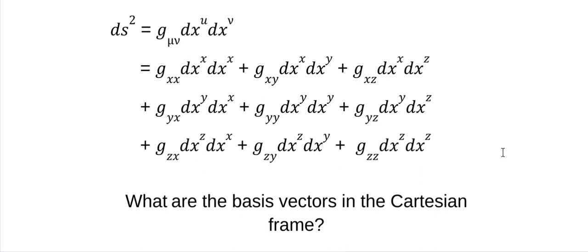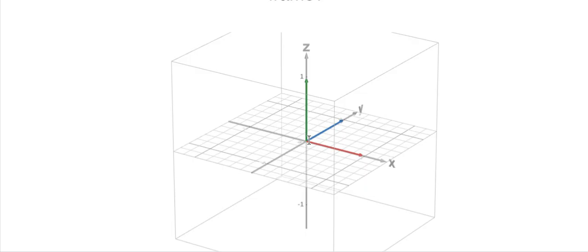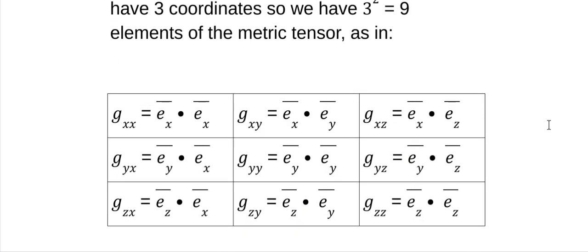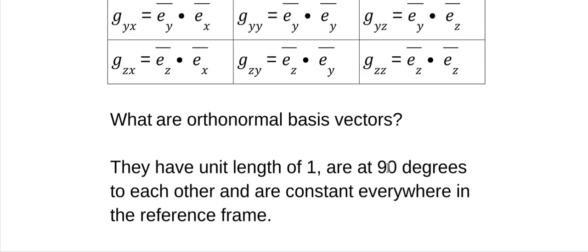Now, what are the basis vectors in a Cartesian frame? Well, you know what they are — you've been using them your whole life. They're just the unit vectors: i, j, k, or x-hat, y-hat, z-hat. They're all the same: they're one unit long and they're at right angles to each other. So you're going to have nine of these in the Cartesian frame when you calculate the metric tensor. It is the dot product of e_x dot e_x, etc. You get a three-by-three matrix. We call those orthonormals — unit length of one and 90 degrees apart.